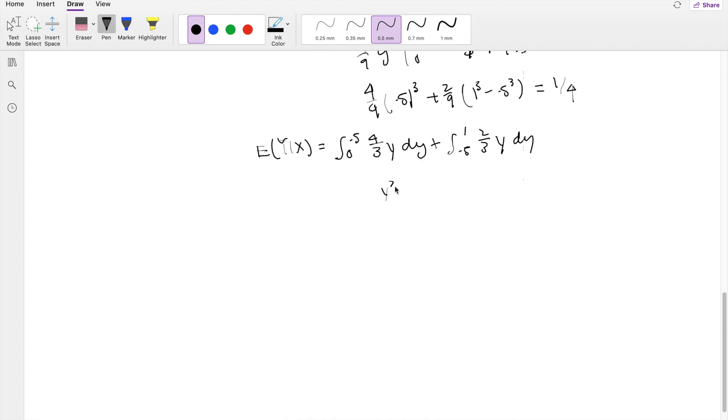So you get y squared here, the 2 is canceled out on the top, so you're just left with 2 thirds, 0 to 0.5, plus 2 third y here, that's going to be y squared, the 2 is canceled out here, integrating from 0.5 to 1, so then you're left with 2 thirds, the lower limit here is going to just give you 0, so that's 0.5 squared, plus 1 third, the upper limit, 1 squared, minus 0.5 squared, is this equal to 5 twelfths.